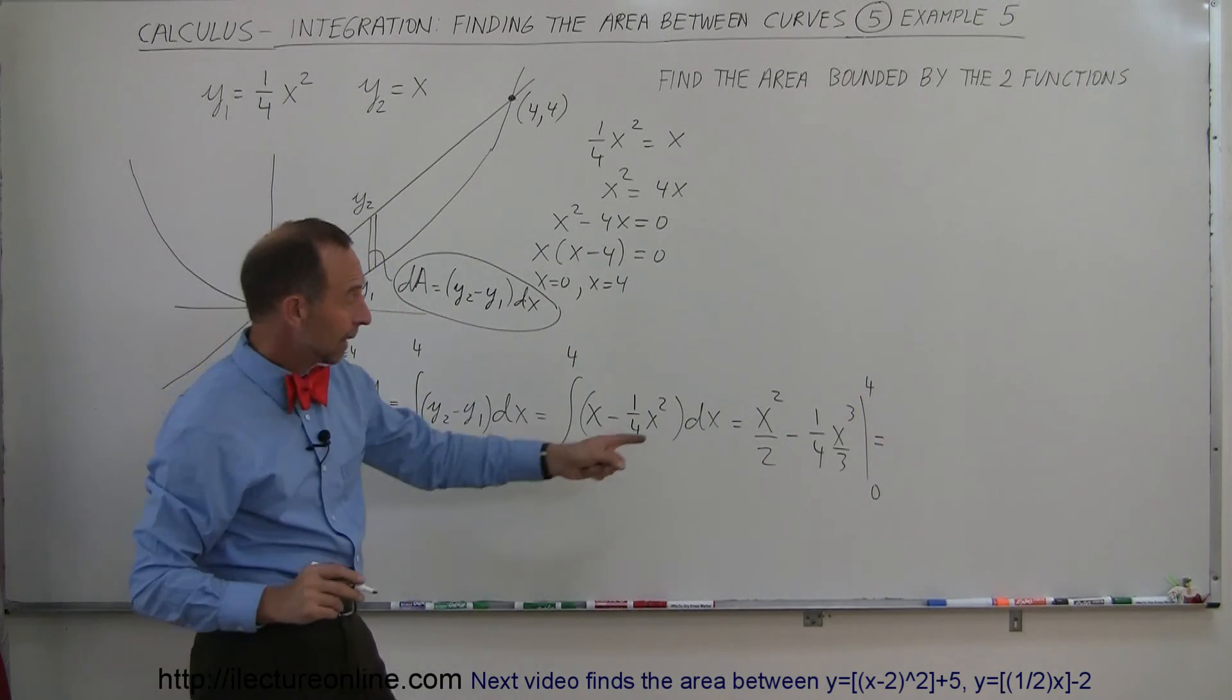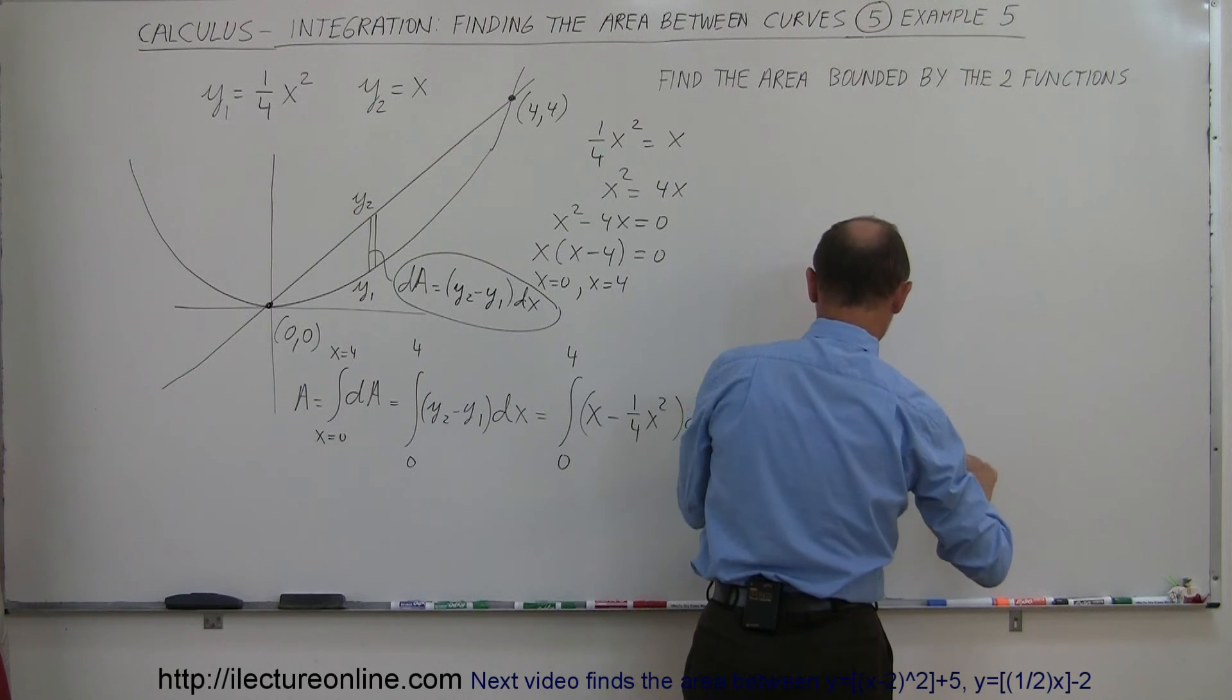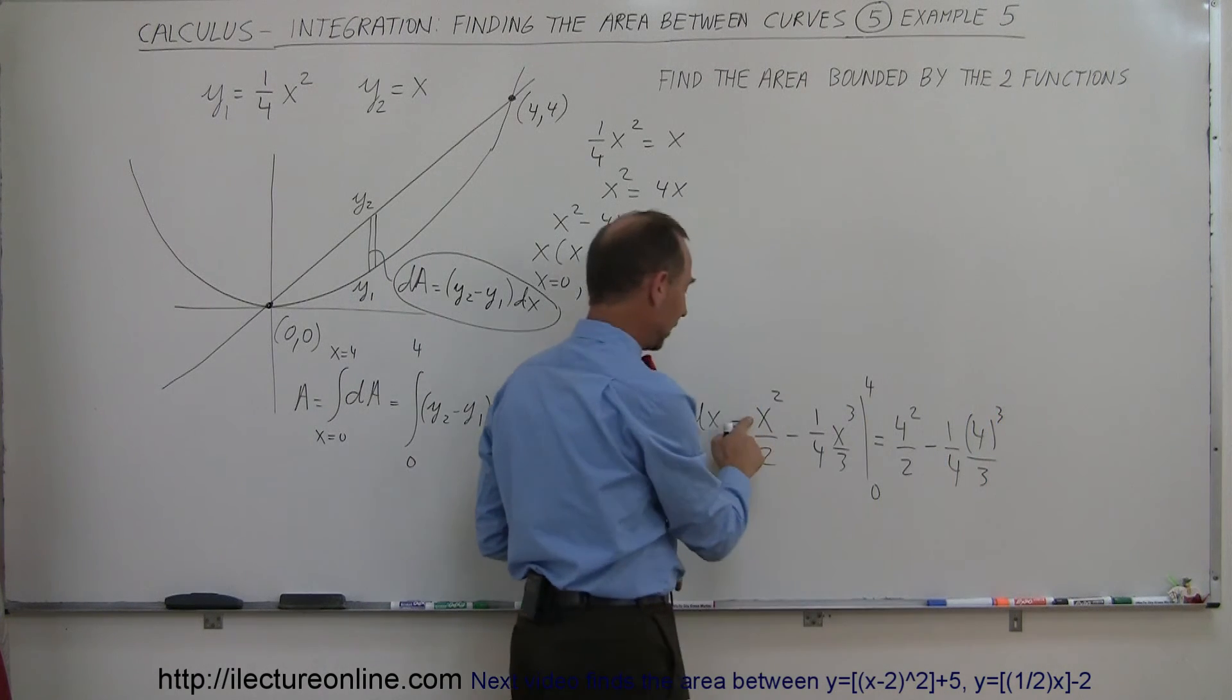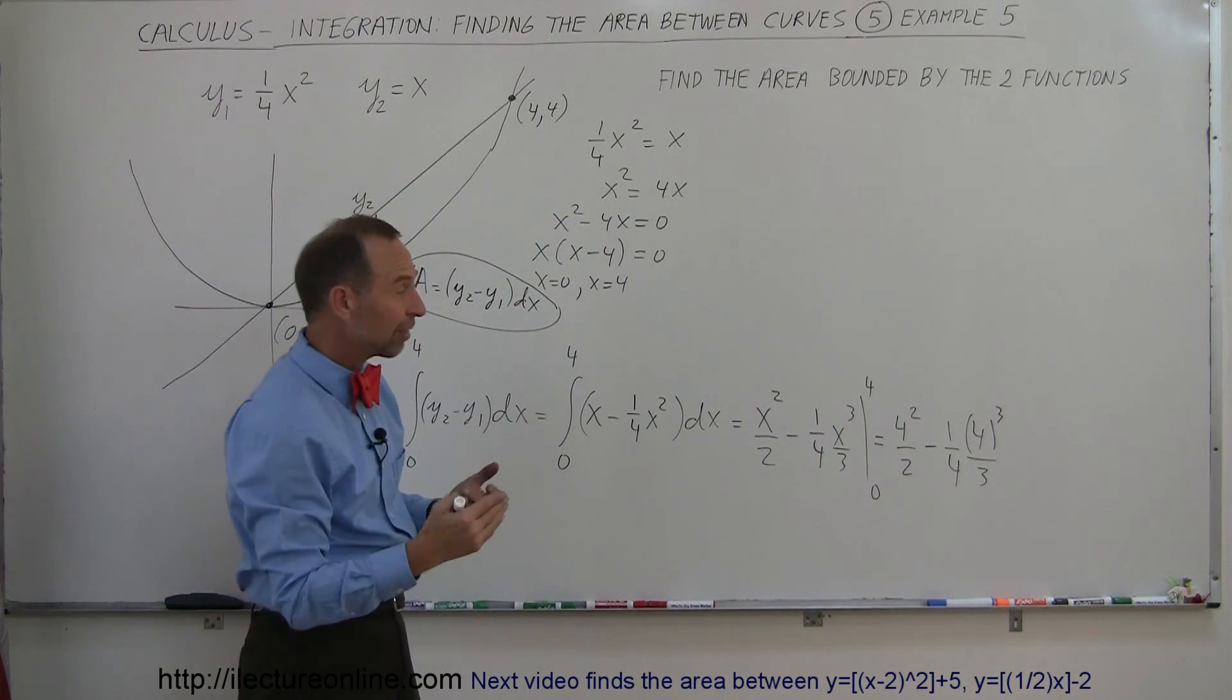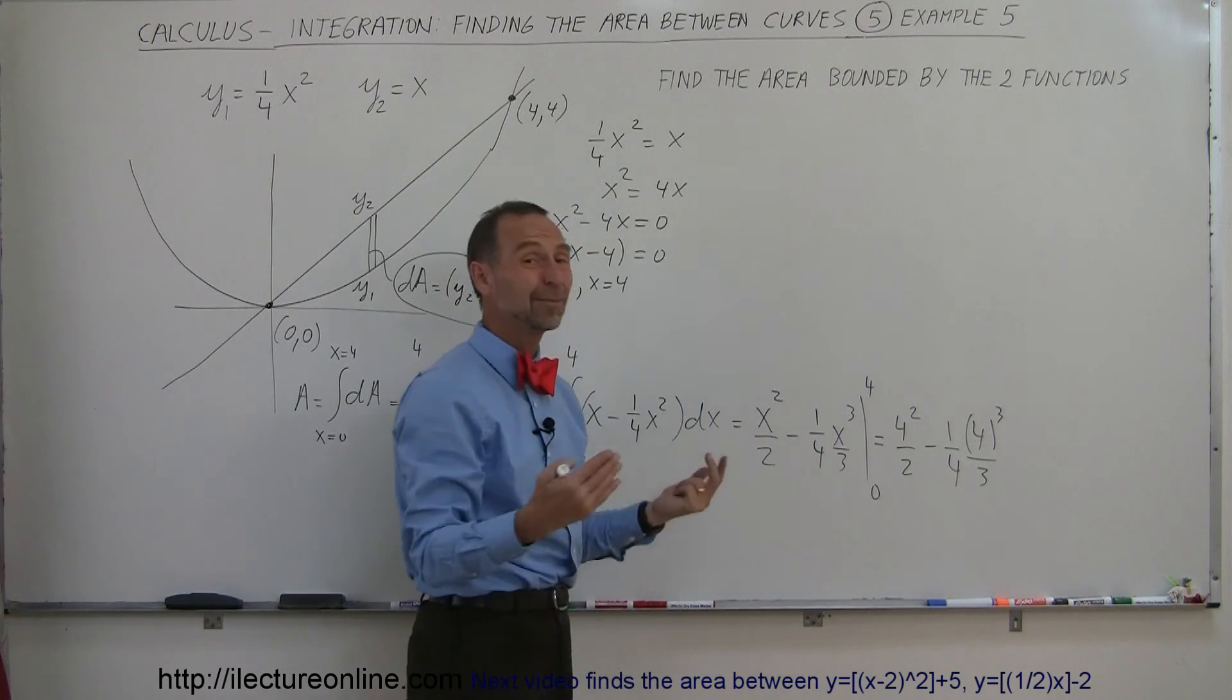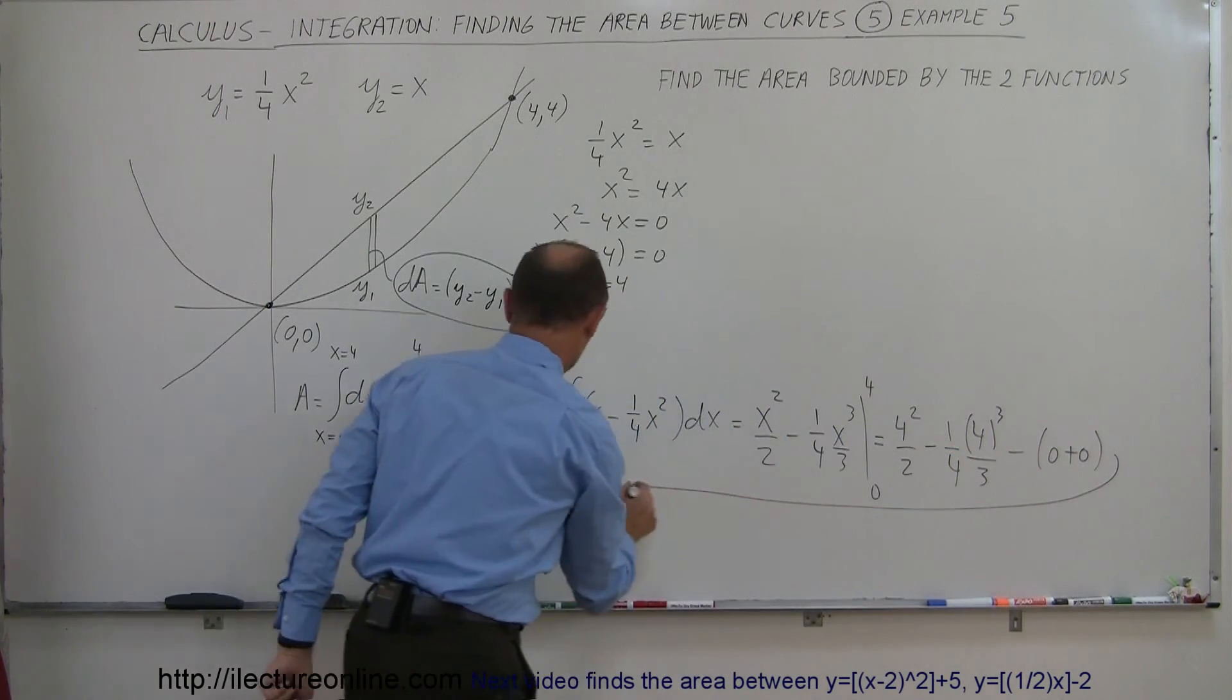When I plug in the upper limit, I get 4 squared divided by 2, minus, when I plug 4 in for x here and here, I get 4 cubed divided by 3. Then when I plug in the lower limits, I need to subtract that, but notice if I plug in 0 here and 0 there, I simply get 0, so it's minus 0 plus 0.